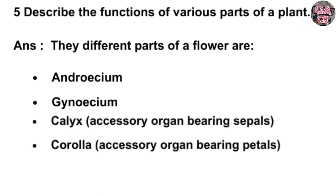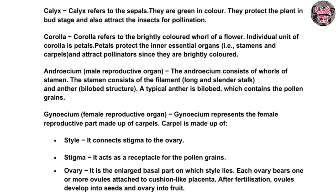Question 5: Describe the functions of various parts of a plant. The different parts of the flower are Androecium, Gynoecium, Calyx, and Corolla. Calyx refers to the sepals — they are green in color and they protect the plant in the bud stage and attract insects for pollination. Corolla refers to the brightly colored wall of the flower; its individual unit is the petal. Petals protect the inner essential organs and attract pollinators since they are brightly colored. Androecium consists of walls of stamen; the stamen consists of a filament and anther. A typical anther is bilobed and contains the pollen grains.